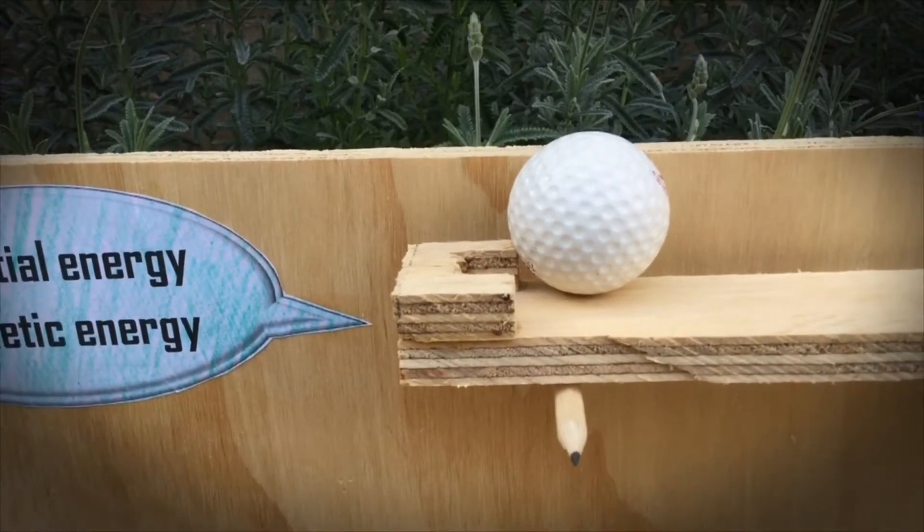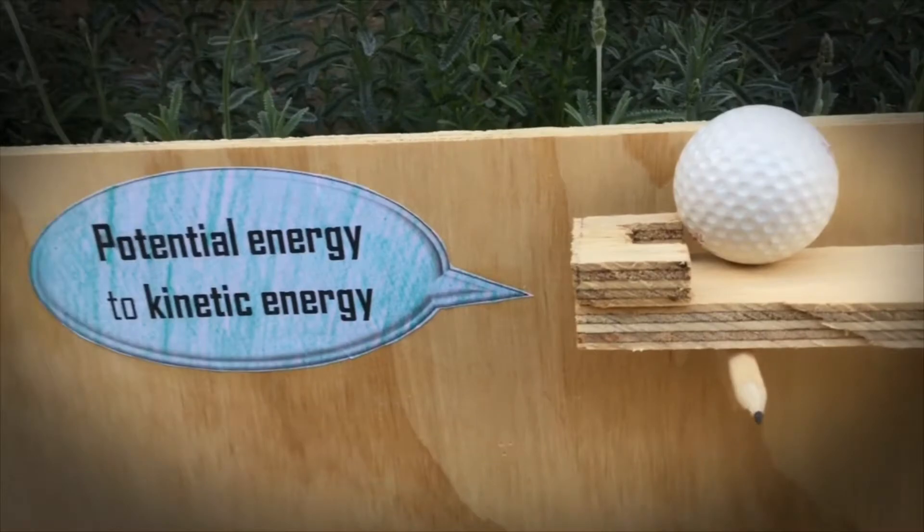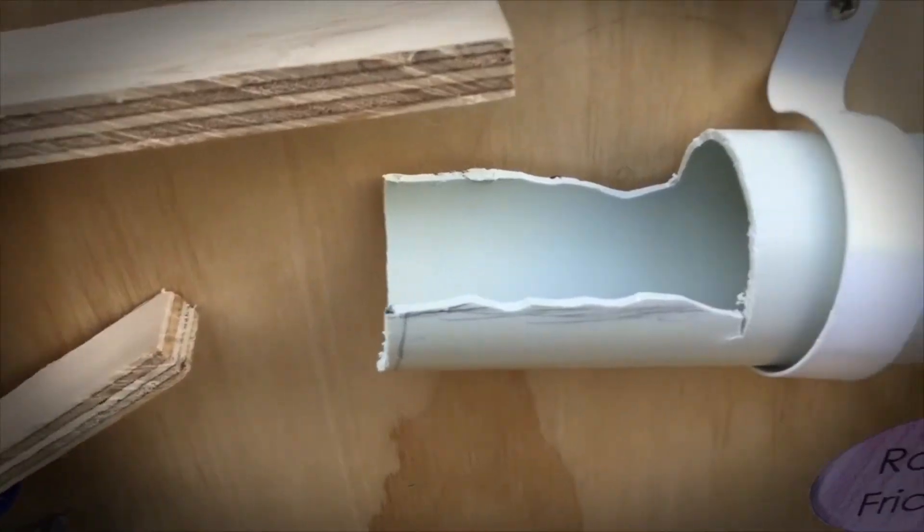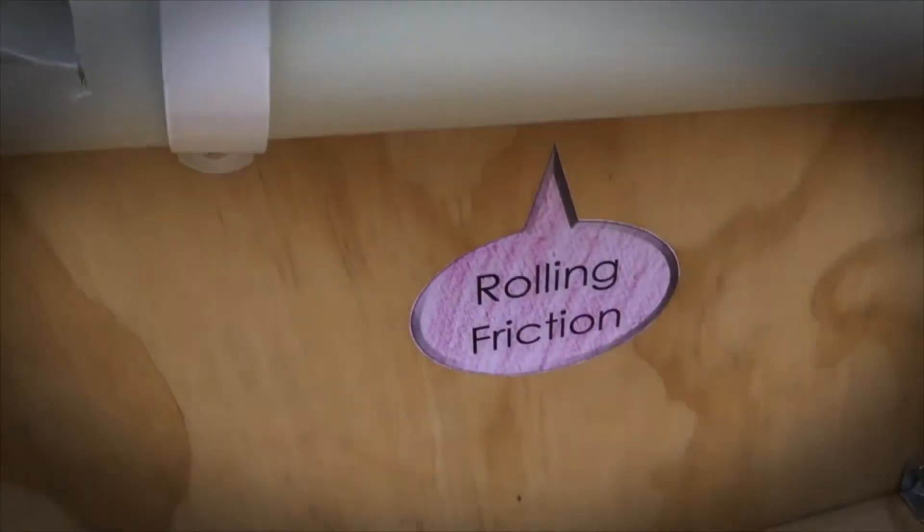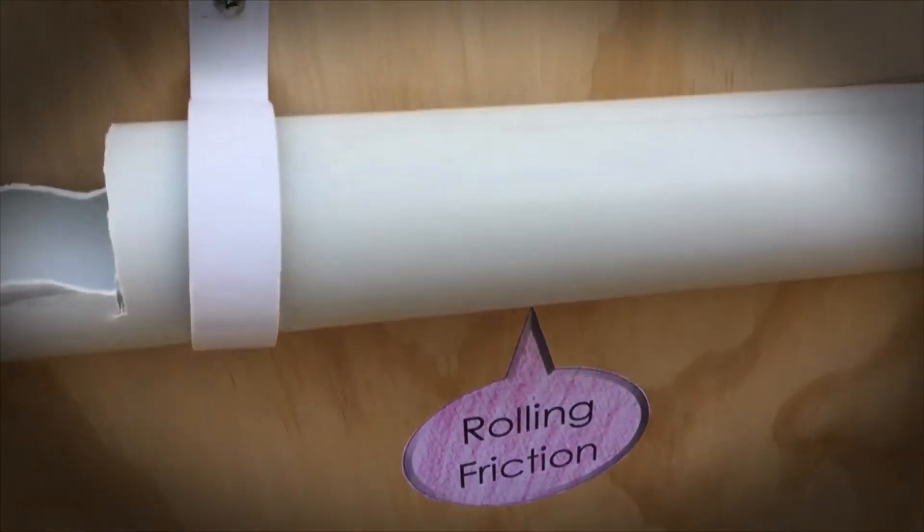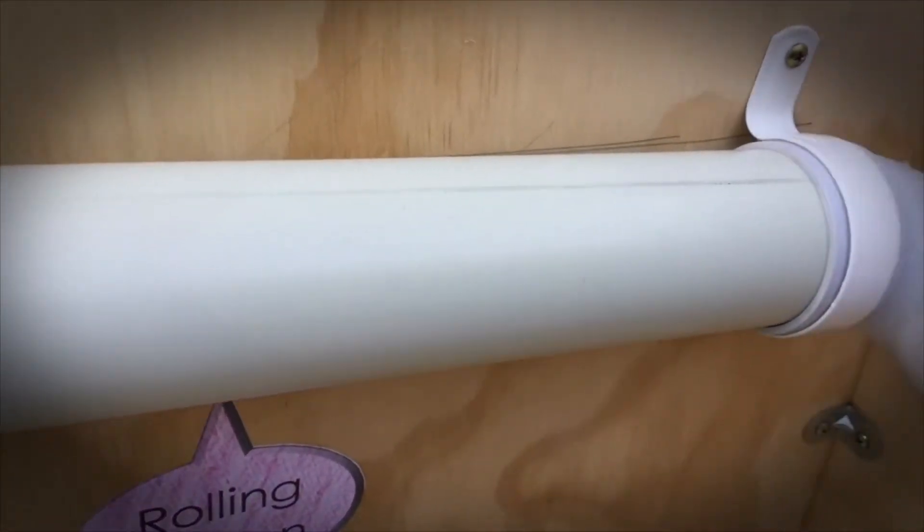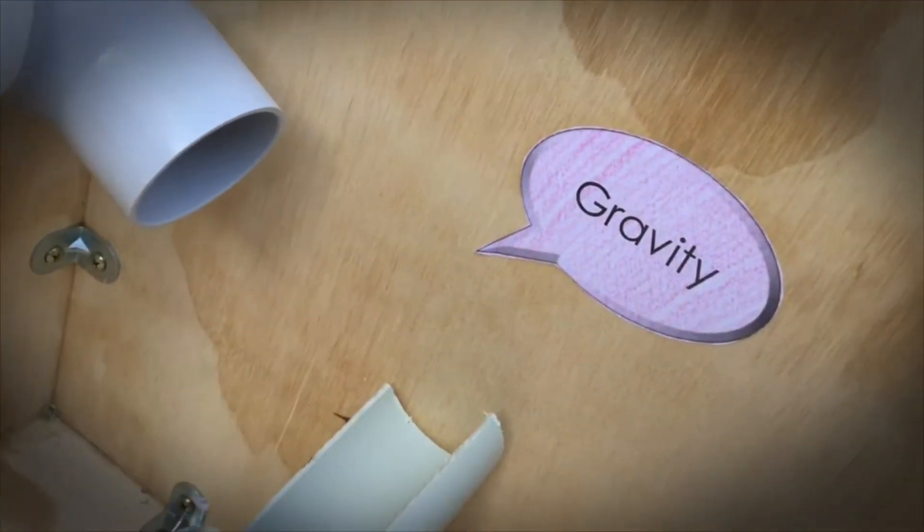That causes the potential energy in the ball to be transmuted into kinetic energy as it rolls down the pipe. Rolling friction is created between the ball and the pipe. Then, under the influence of gravity, it falls into the other pipe.